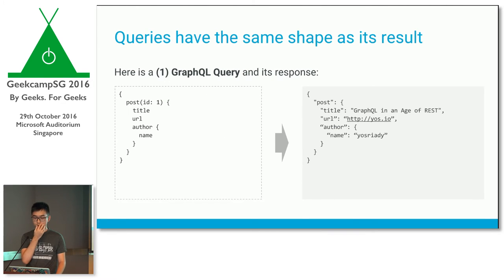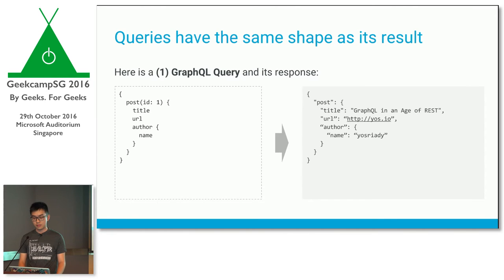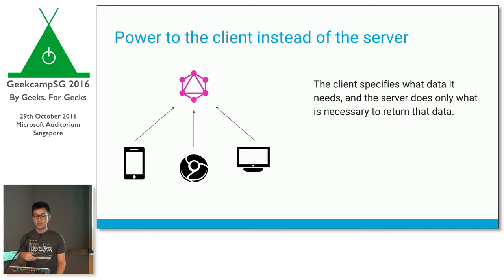Here's an actual GraphQL query. On the left is a GraphQL query, and on the right is the response the GraphQL service returns. You can tell just from the shape of the query what the response would look like — this is what they mean when they say GraphQL is declarative. The key idea is that we give power to the client: the client specifies only the data it needs, and the server optimizes and returns just that. The client is no longer beholden to what the server returns.